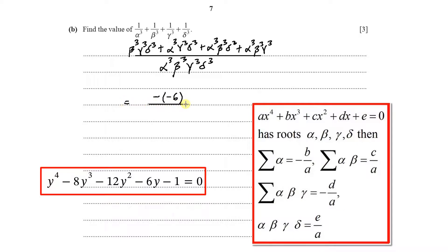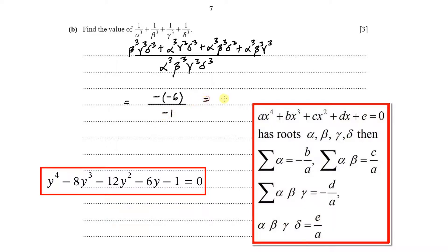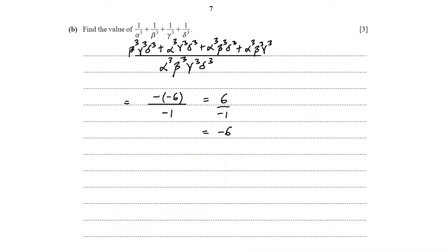The denominator is the product of all roots. For a quartic equation, the product of roots equals e over a, where e is the constant term. Here e is minus 1 and a is 1, giving minus 1. So the expression equals 6 over minus 1, which is minus 6. The answer to part (b) is minus 6.